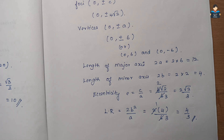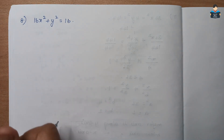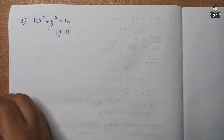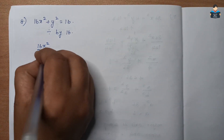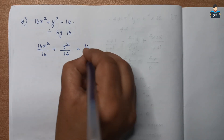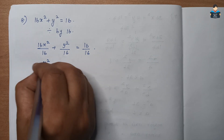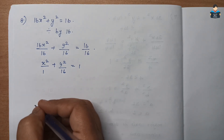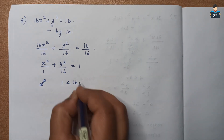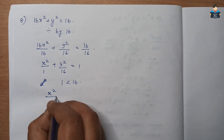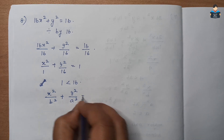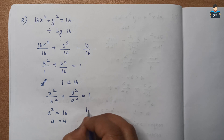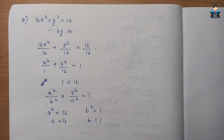Next is Question 8: 16x² + y² = 16. Divide by 16 to get standard form: 16x²/16 + y²/16 = 1, which gives x²/1 + y²/16 = 1. Since 1 is less than 16, the standard form is x²/b² + y²/a² = 1. So a² = 16, a = 4, b² = 1, b = 1.